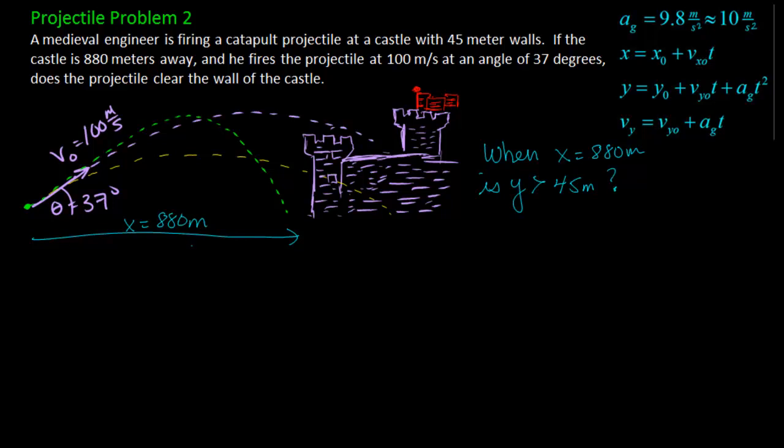So when the position of the catapult ball is 880 meters in the x direction, is the position in the y direction above 45? Because if it's above 45, the ball will be up here somewhere and it would make it into the castle. If it's below 45, the ball will be down here somewhere and it would actually hit the castle wall. So it's a little bit tricky about what this problem is asking us for.